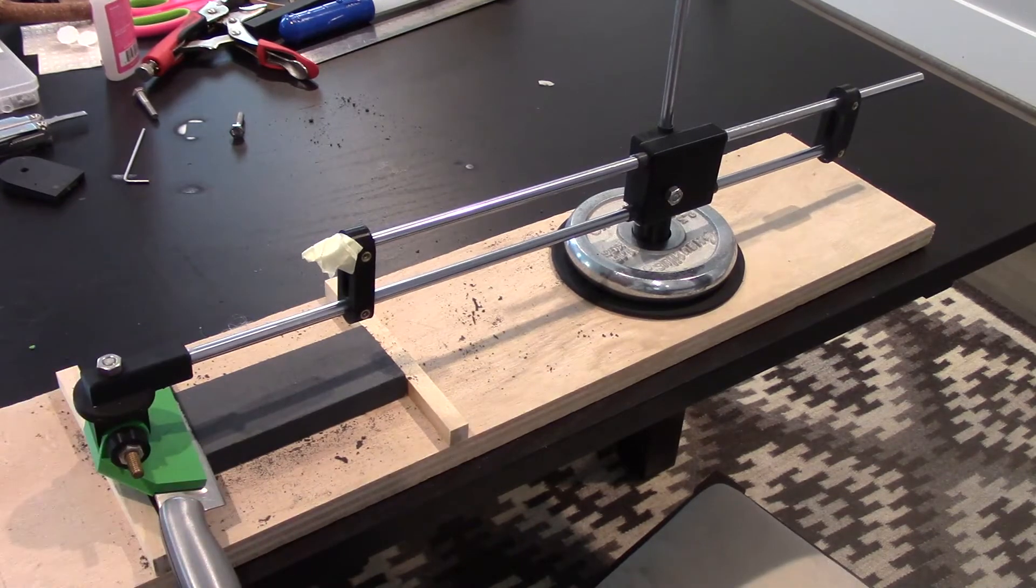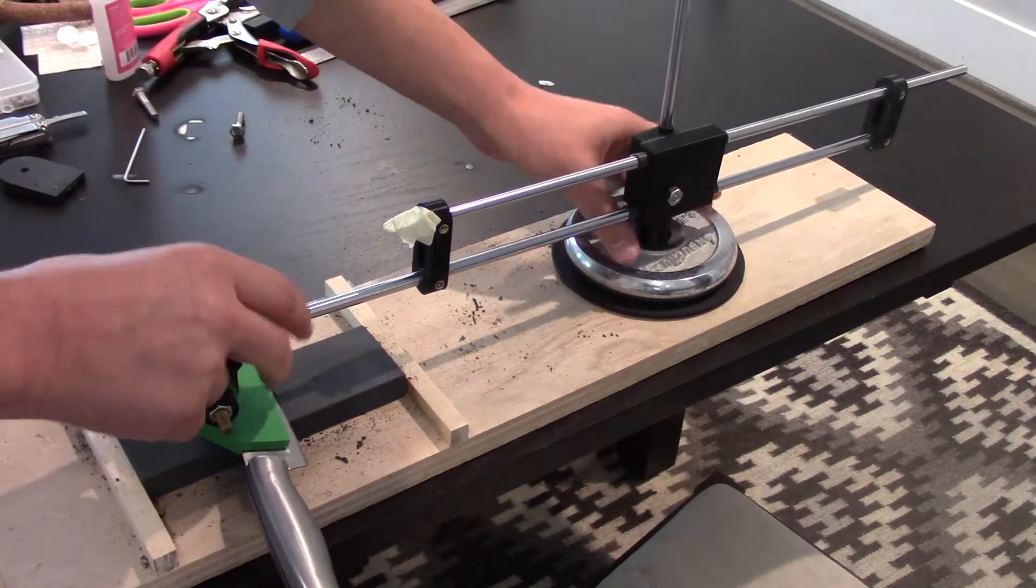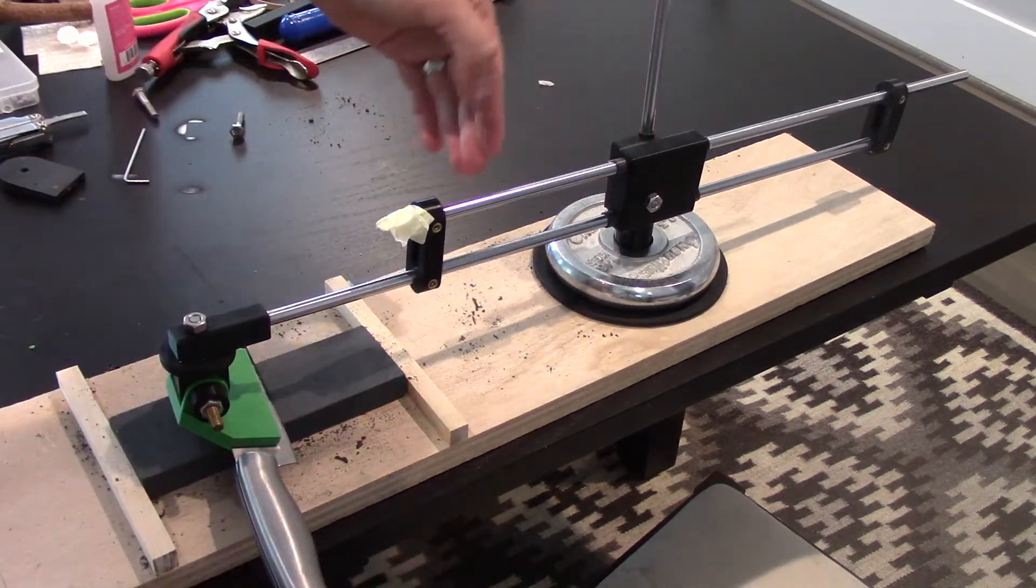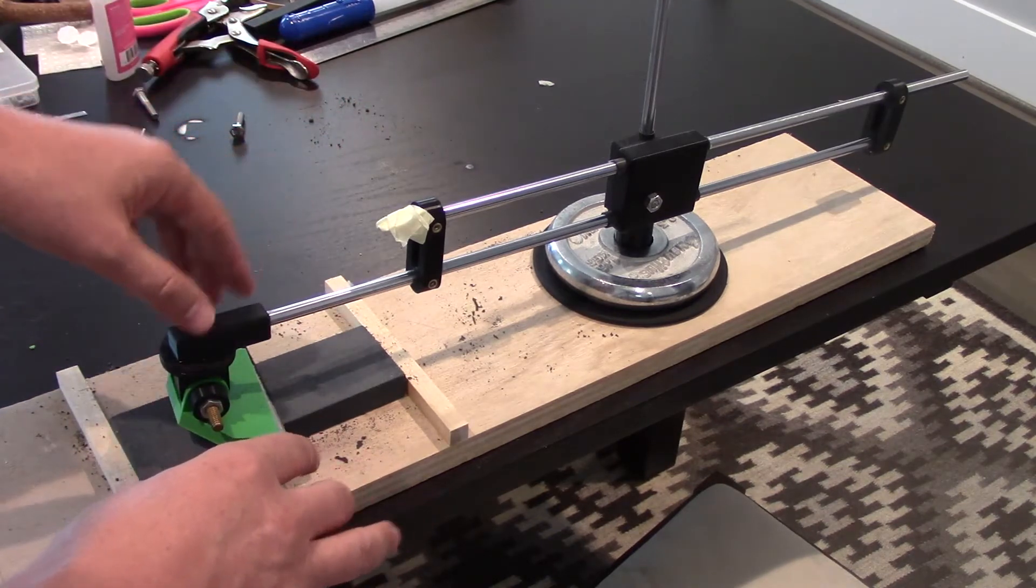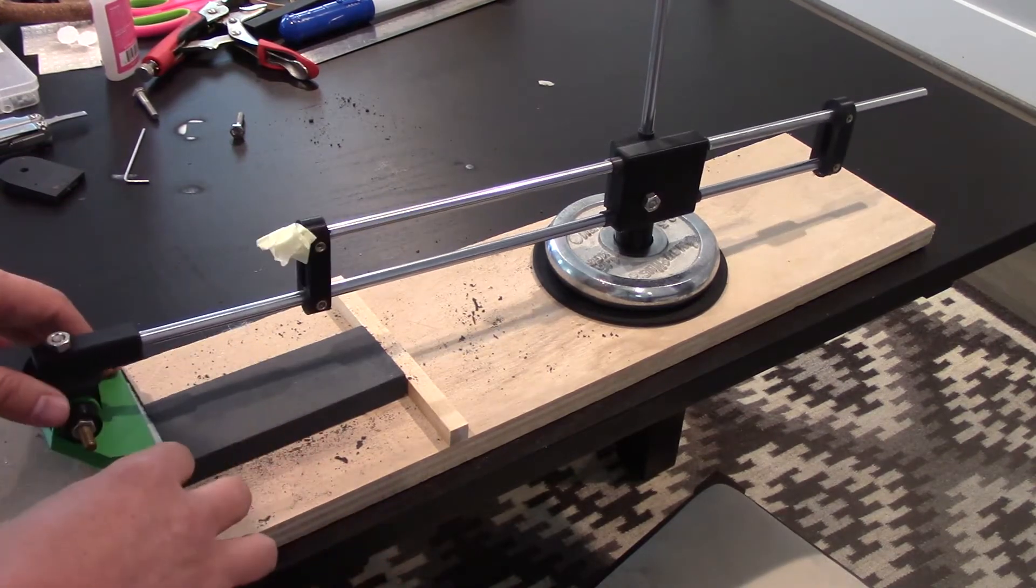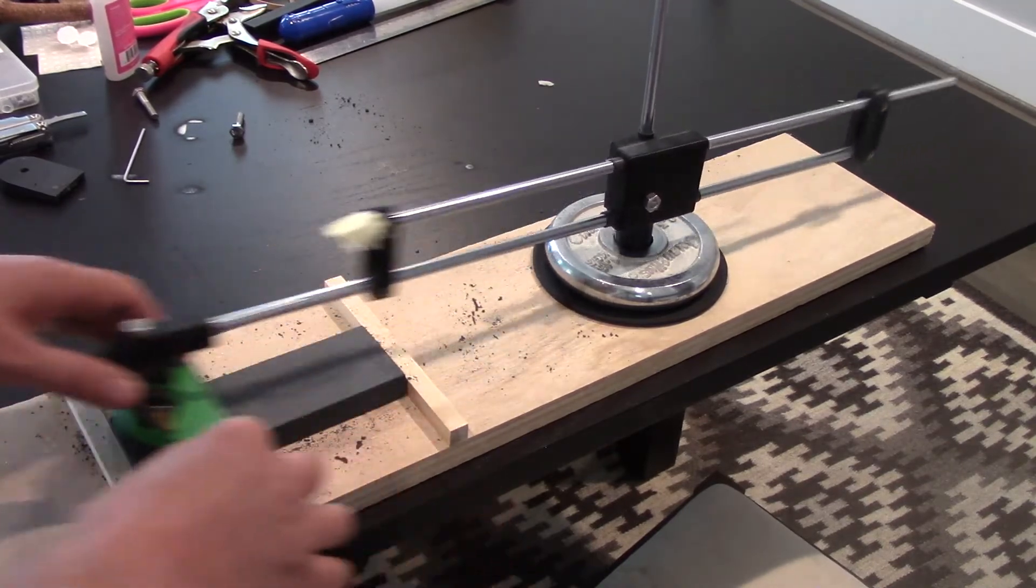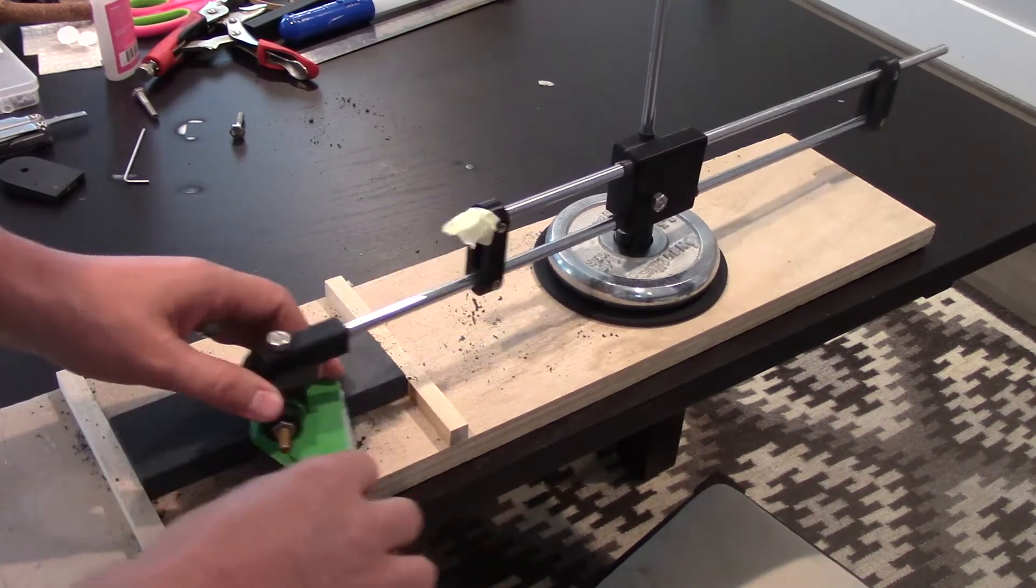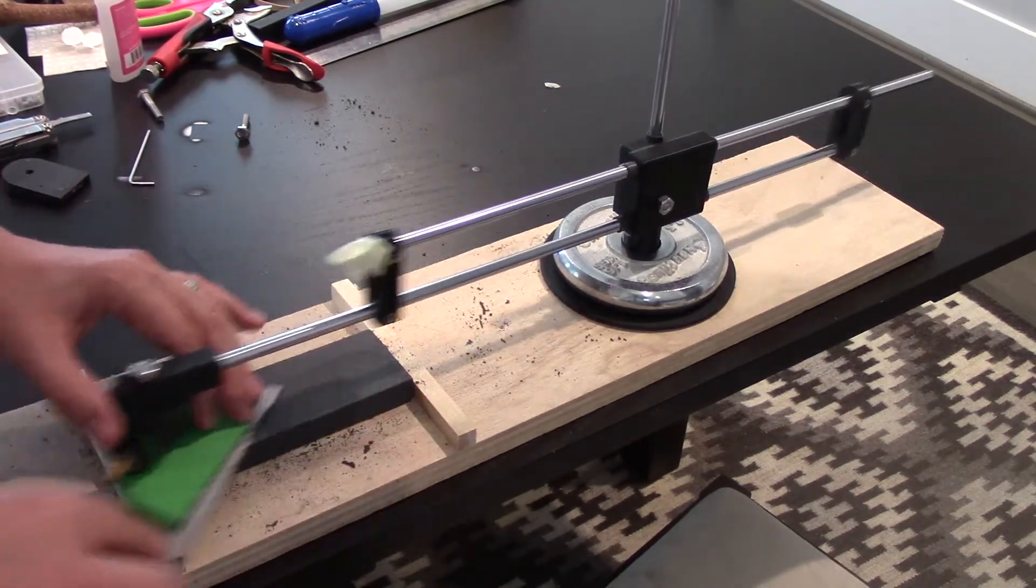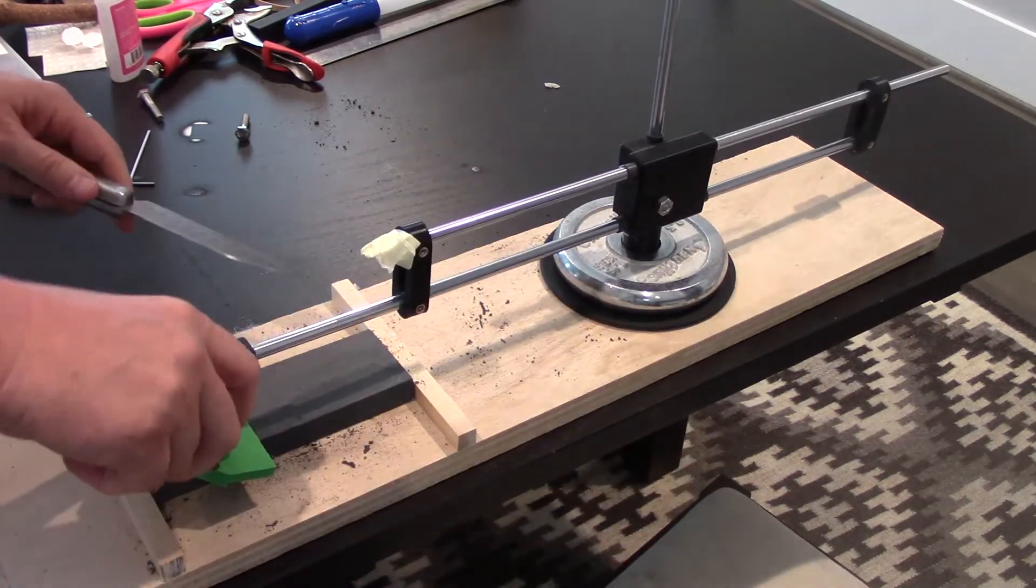And one thing great about the design too that I realized is you can kind of set your knife at the center of the stone, and then you adjust where that is so that you get essentially a weightless knife. So when you're at the middle of the stone, it's weightless, and then you can adjust the pressure very easily. You can also go at different angles and pivot.